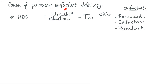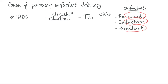Causes of pulmonary surfactant deficiency: the most important is neonatal respiratory distress syndrome (also known as hyaline membrane disease). The baby has intercostal retractions and shortness of breath. Treatment: continuous positive airway pressure (CPAP) and exogenous surfactant. Surfactant drugs end in '-actant': beractant, calfactant, and poractant.